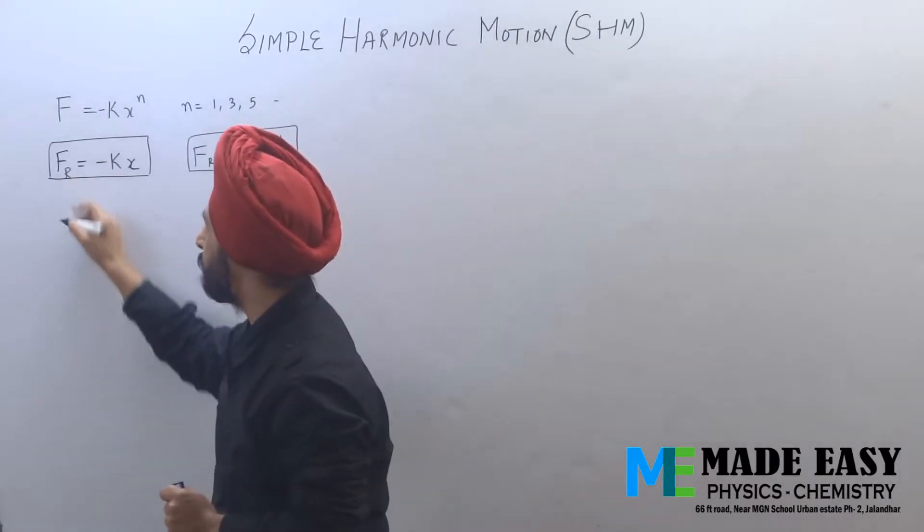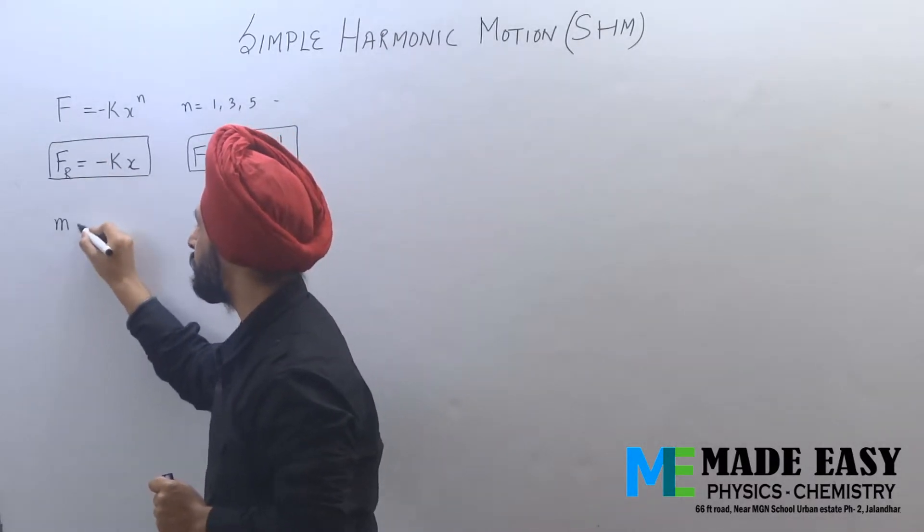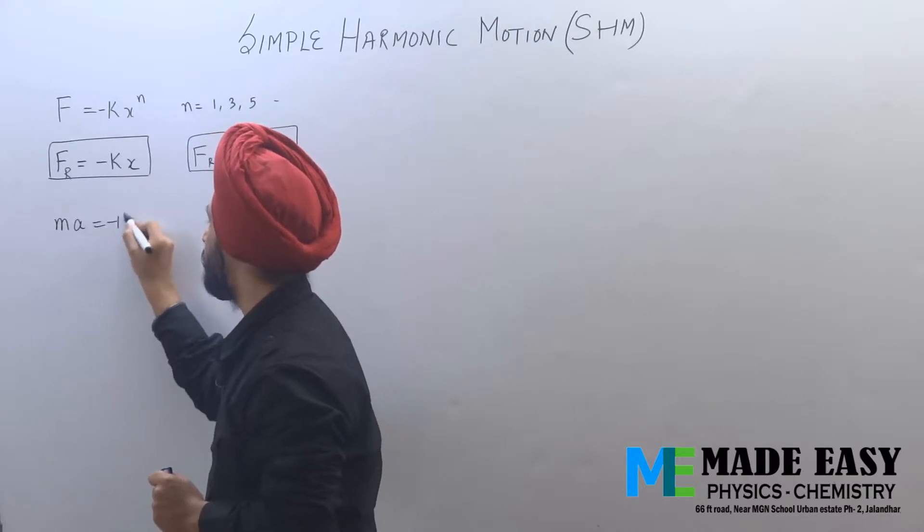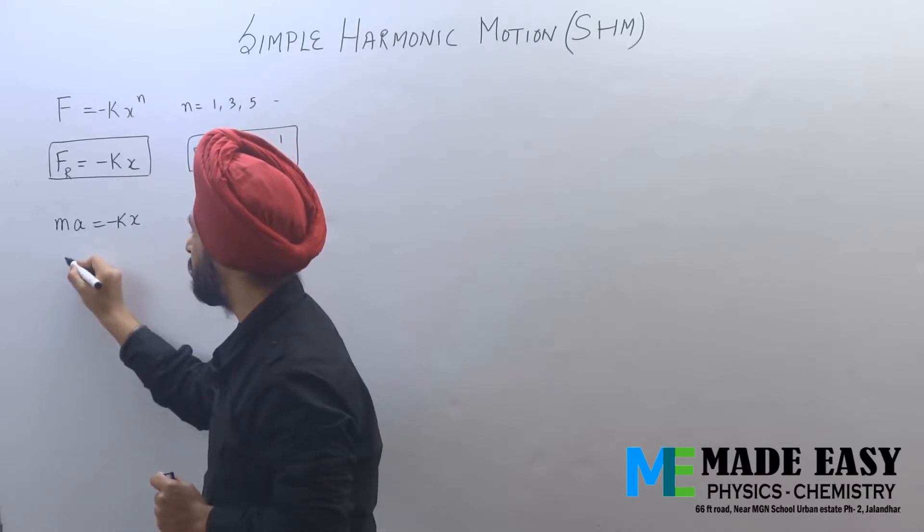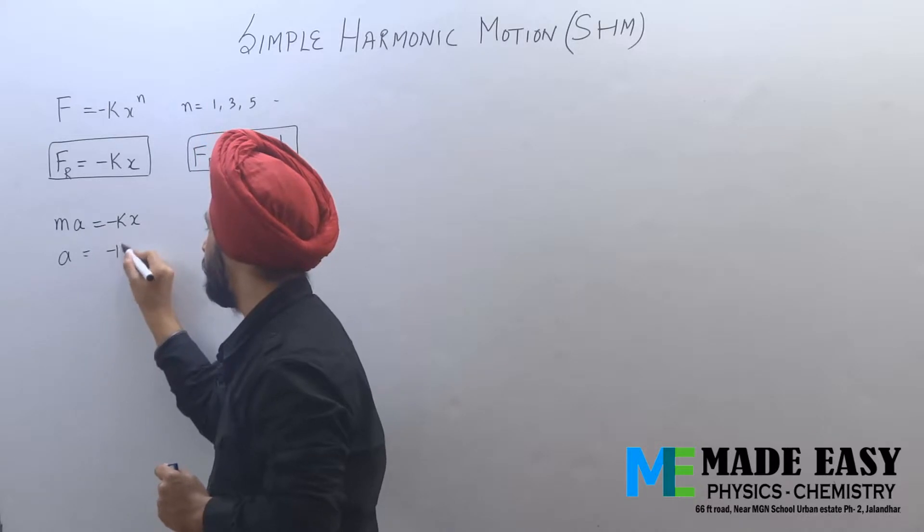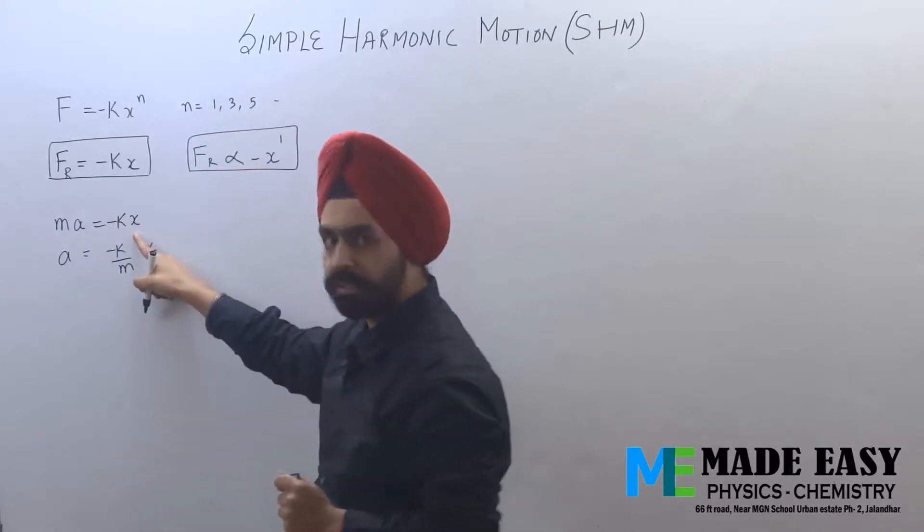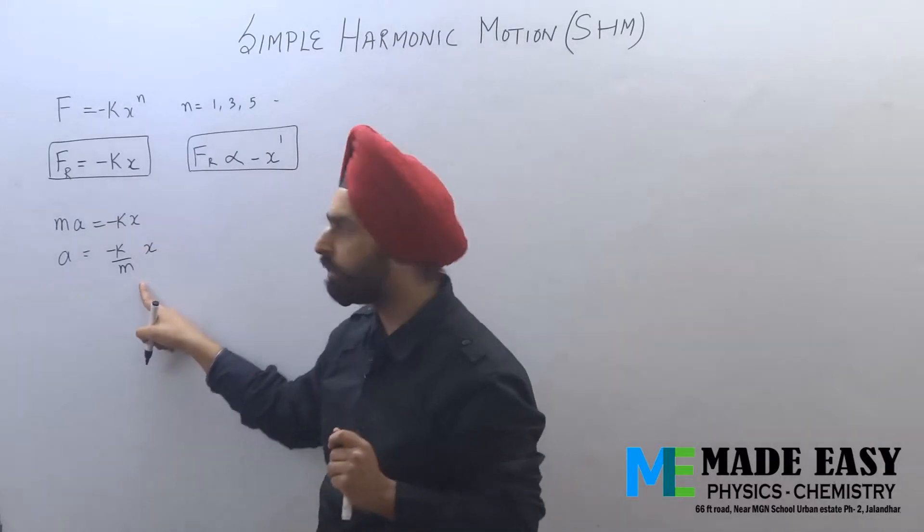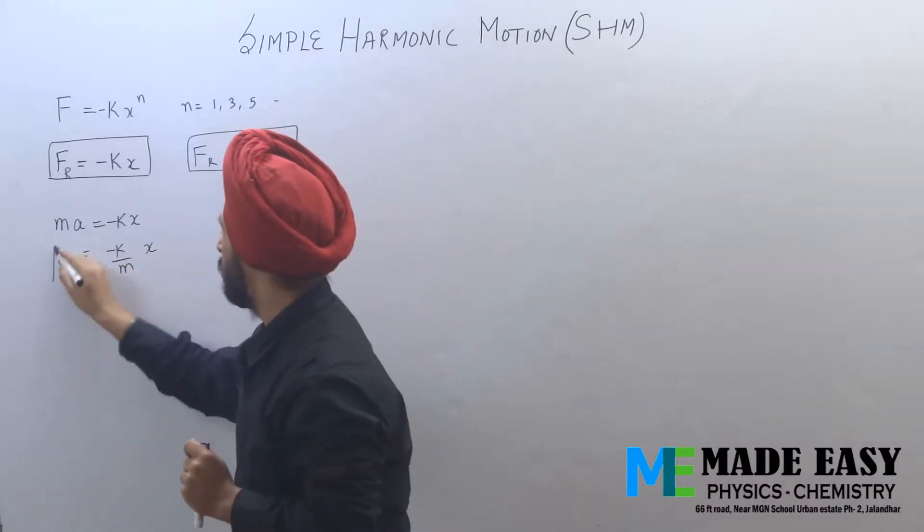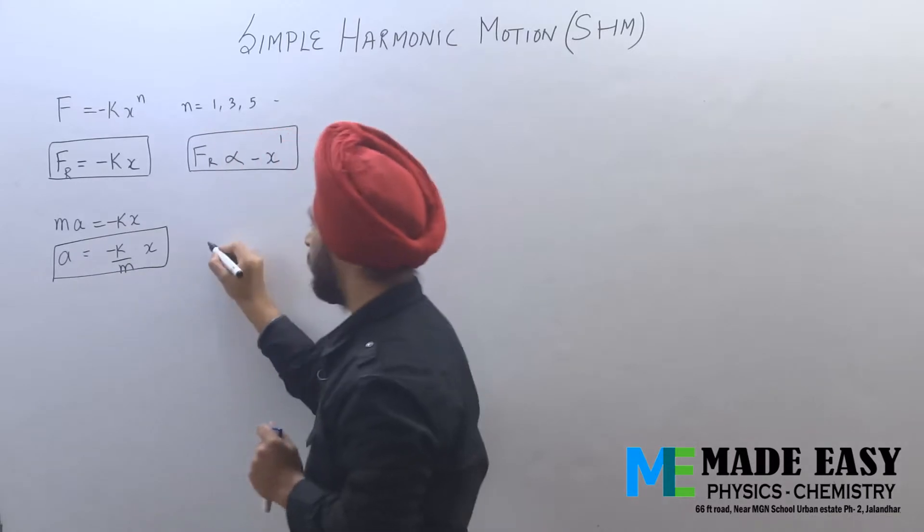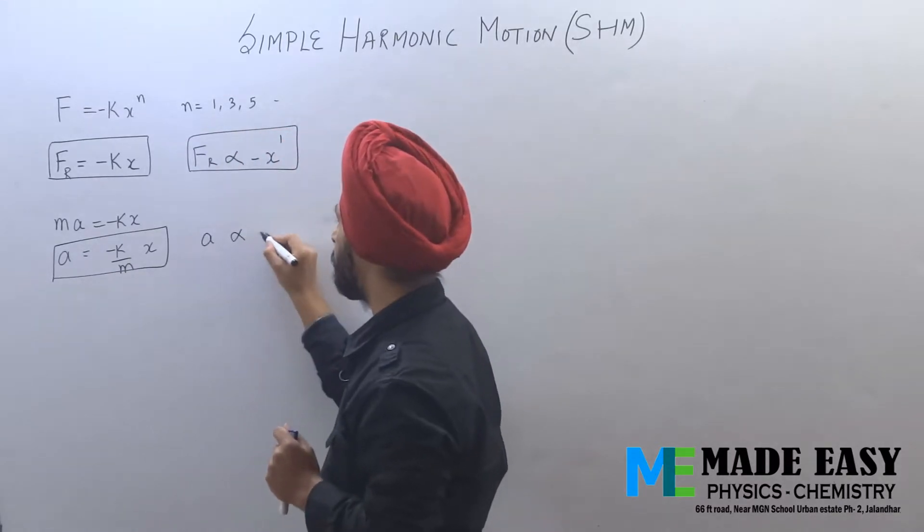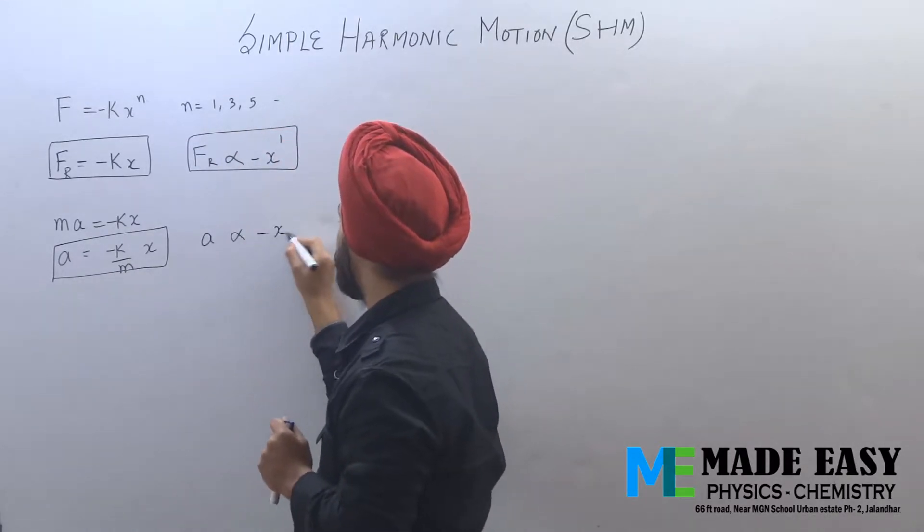This equation can also be written as force equals mass into acceleration equals minus kx. So I can write acceleration is equal to minus k upon m into x. k is some constant, mass of the body also remains constant, so we can also say acceleration is directly proportional to minus x.